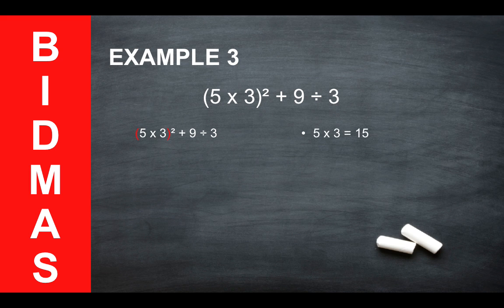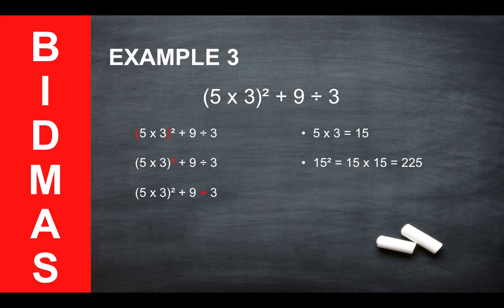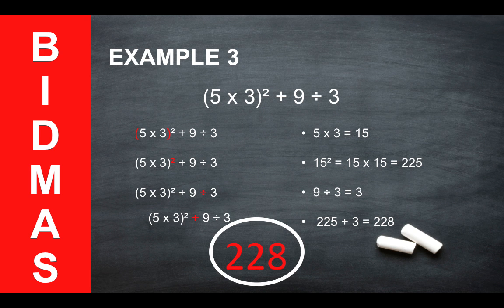Then you need to work out the indices. So you would do the 15 times 15 because you're squaring that number to give you 225. Next, you need to work out the divisions. 9 divided by 3 will give you 3. And finally, you work out the addition. So you do 225 plus 3 to give you 228.